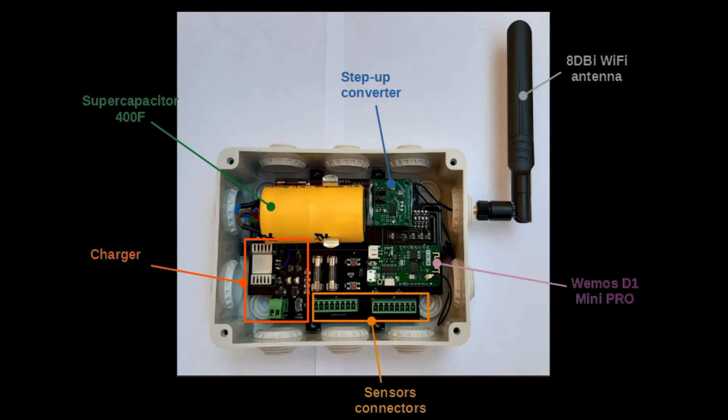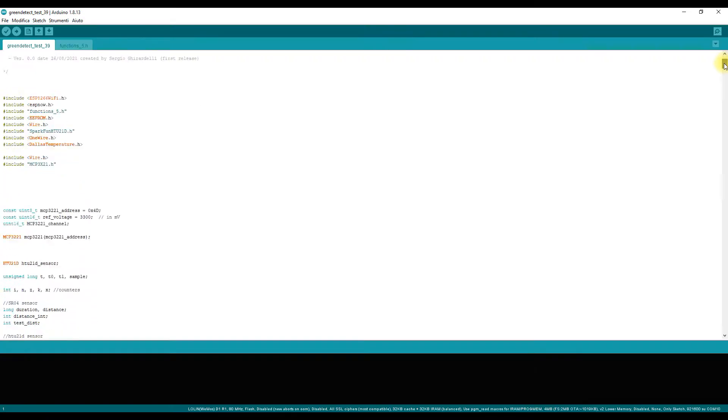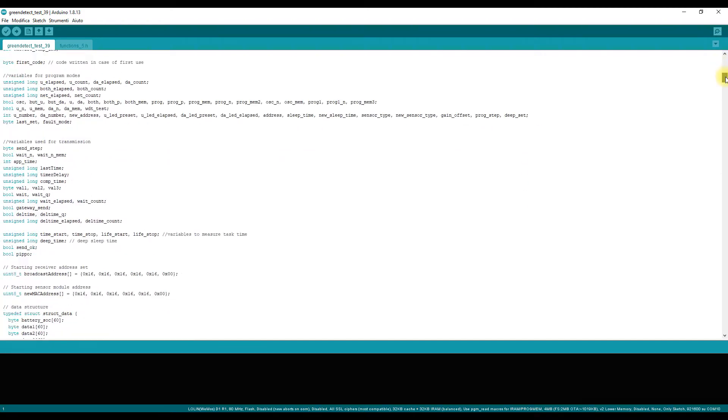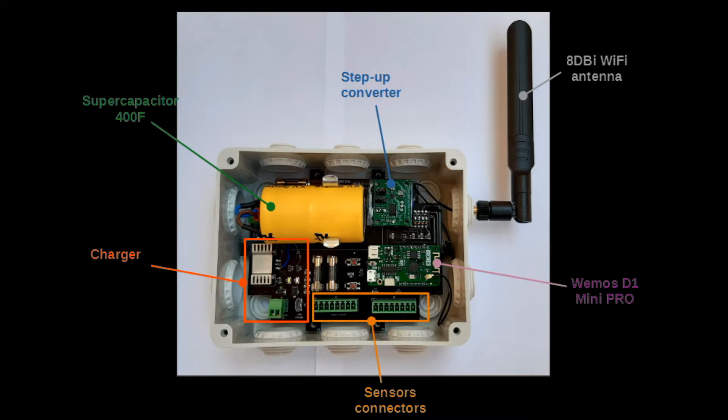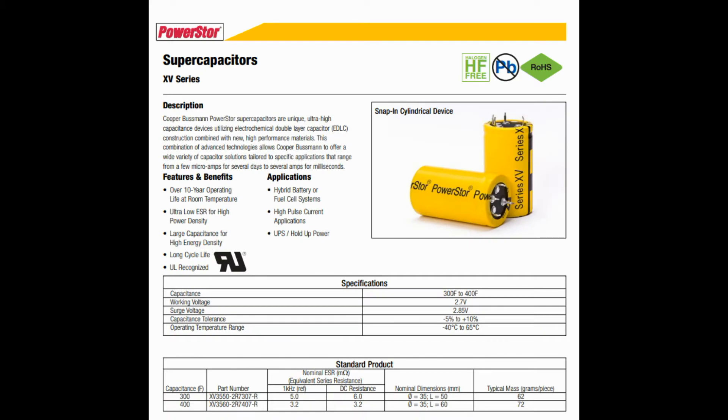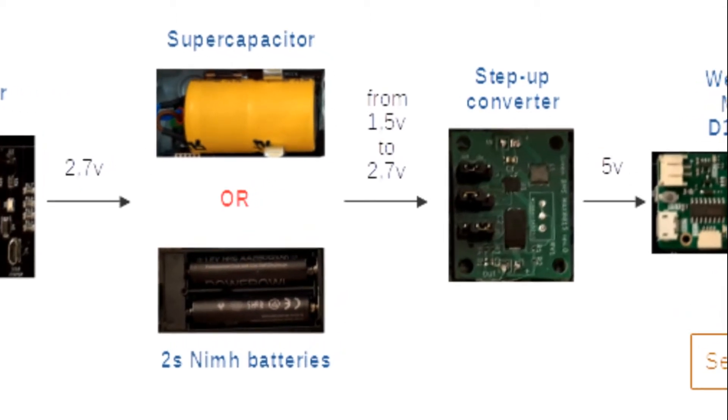The sensor module is based on the Wemos D1 Mini Pro board containing the ESP8266 microcontroller. The microcontroller programming software was developed with Arduino IDE. The power supply to the microcontroller and the sensors is provided by a 400 Farad supercapacitor. The supercapacitor voltage output is between 1.5V and 2.7V and is raised to 5V by a step-up converter.